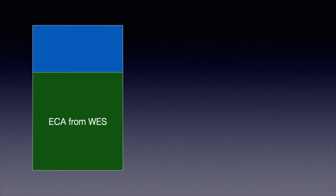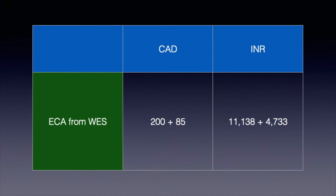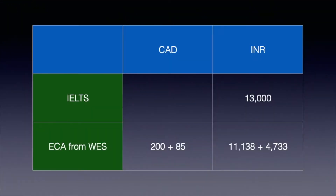ECA is required for degrees and diplomas earned outside of Canada and is needed to apply for immigration programs. For WES assessment you will need to pay 200 Canadian dollars, and to send your documents you will also need to pay for courier, which is around 85 Canadian dollars — equivalent to a total of 15,871 Indian rupees. So before your ITA, you will need to spend money on these two items per person.